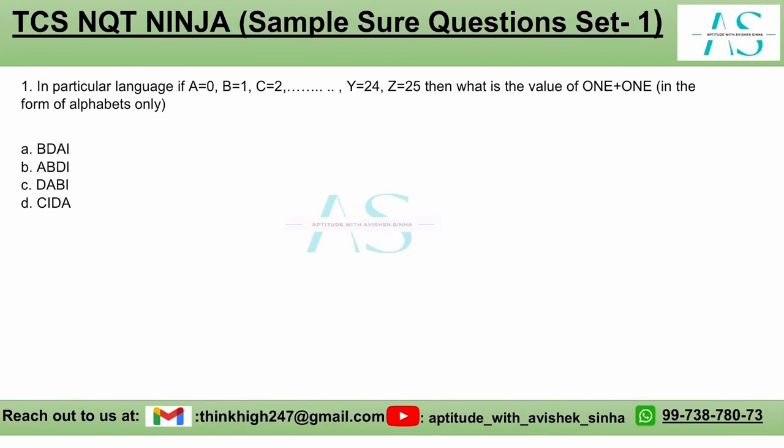In a particular language if A is equivalent to 0, B is equivalent to 1, C is equivalent to 2 and it continues one by one up to Z being equal to 25, then we have a question: what is the value of ONE+ONE in the form of alphabets only? We need to add these values.